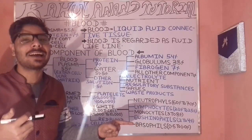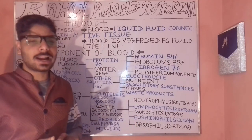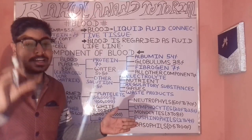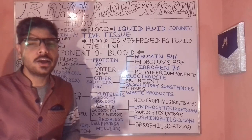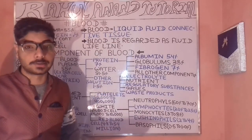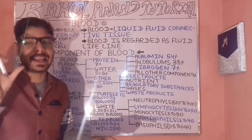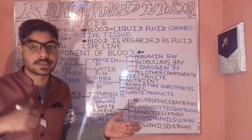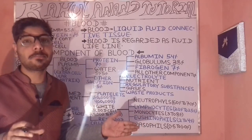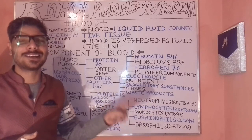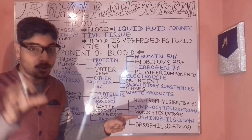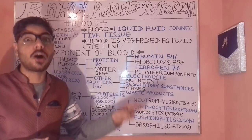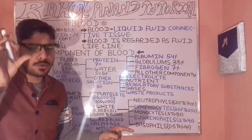Let's understand the different components and composition of blood. We have a device named the centrifuge. The centrifuge machine plays an important role in separating the components of blood.